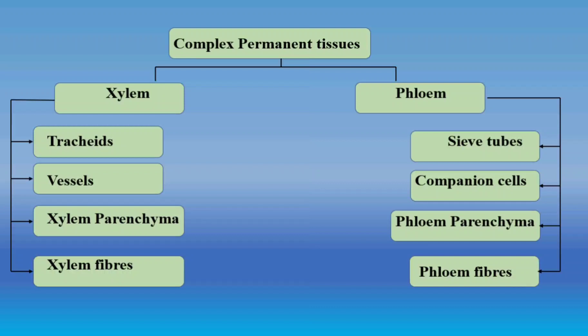Similarly, phloem is made up of four different components that are dissimilar in structure: sieve tubes, companion cells, phloem parenchyma, and phloem fiber. Together they combine and perform a similar function — the conduction of food.